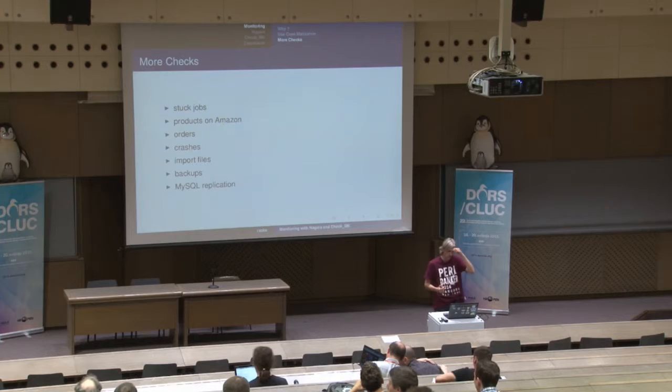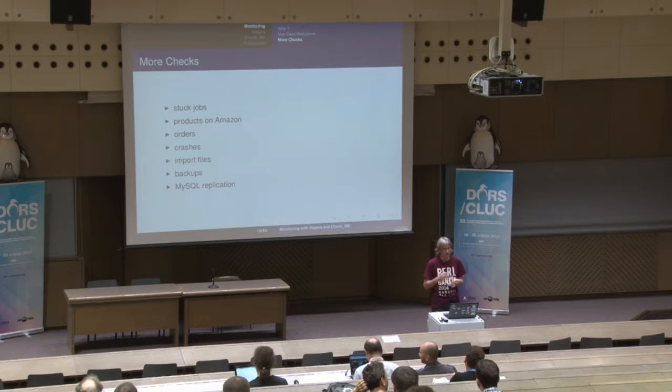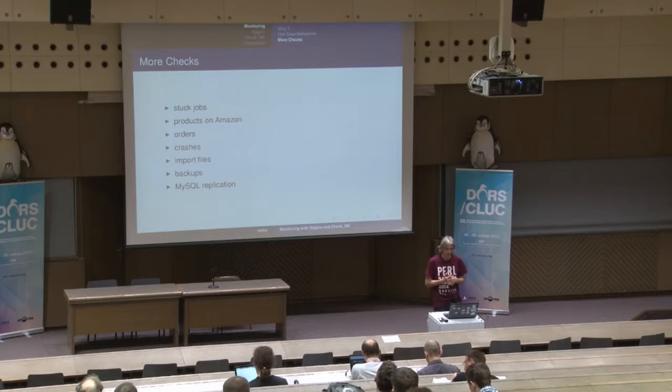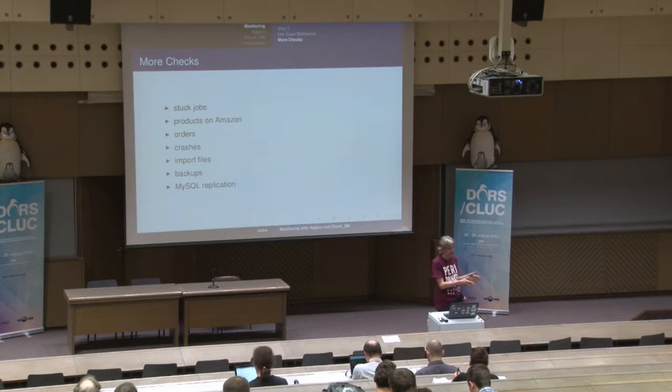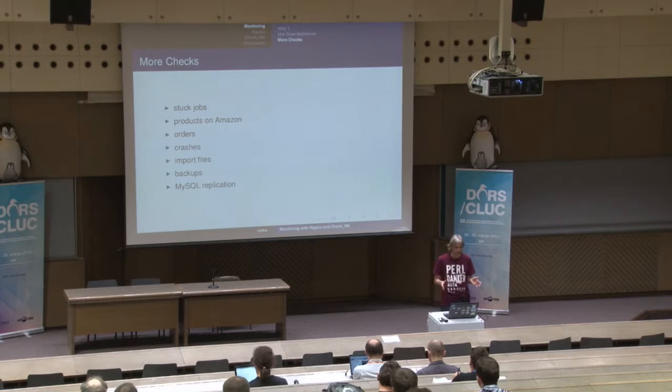I have a few stores which put their products on Amazon automatically. Their API for doing so is not easy — you can get problems, they throttle you or don't accept some data. You can't really handle all those cases, so you just check: I have a thousand products marked for Amazon, they should appear on Amazon's website, you check how many are really there, and if there's a big difference you know something is wrong and you have to investigate.